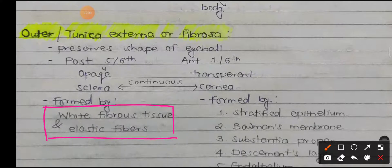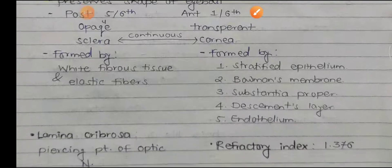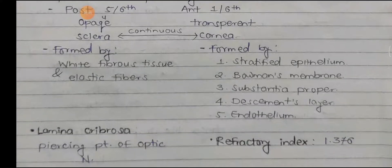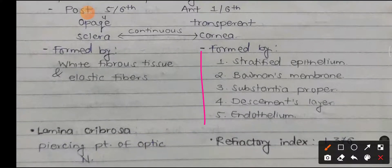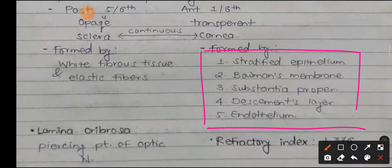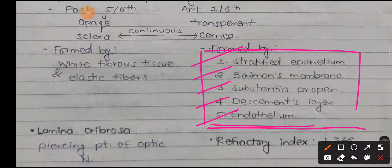The cornea is formed by five layers. The first is the stratified epithelium, second is Bowman's membrane, third is the substantia propria, fourth is Descemet's layer, and the fifth is the endothelium.